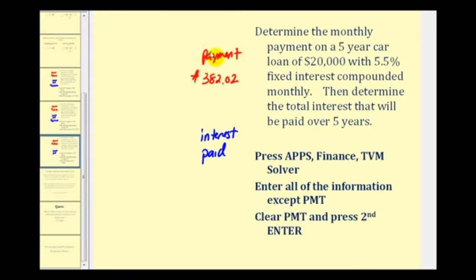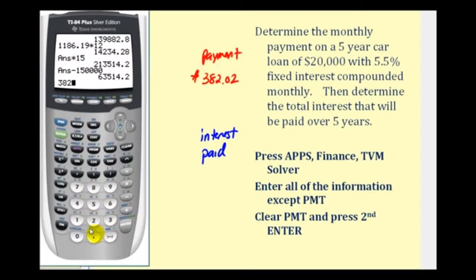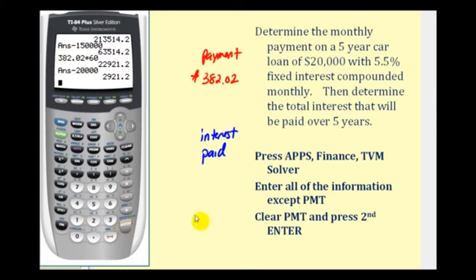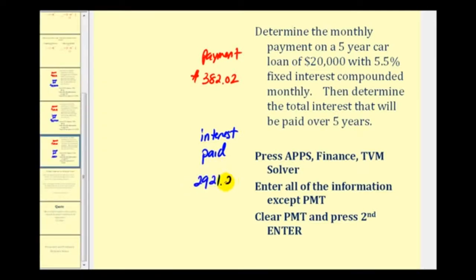To determine the total amount of interest paid, we'd multiply our monthly payment times 12 times 5, or just $382.02 times 60. This is the total amount paid, and then we'll subtract out the loan amount of $20,000. So over the five-year period, we would pay $2,921.20 of total interest. And that's going to do it for this video. I hope you can take advantage of this tool on the graphing calculator to gather all the information you need before taking out a loan. Thank you for watching.